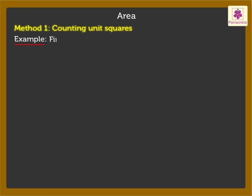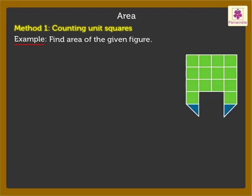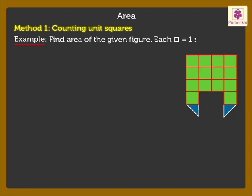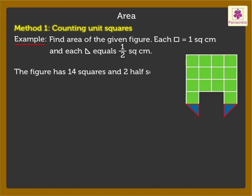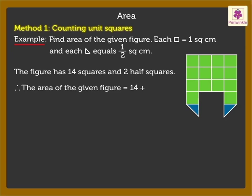Now let's find the area of the given figure. Here each square equals 1 square centimetre and each half square equals half a square centimetre. On counting, we get that the given figure has 14 squares and 2 half squares. Therefore the area of this given figure is equal to 14 plus half plus half, which is 15 square centimetres.